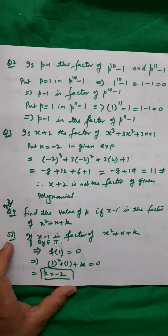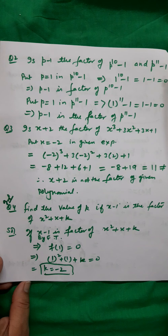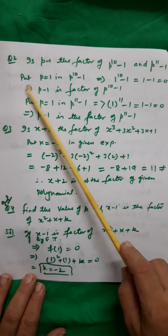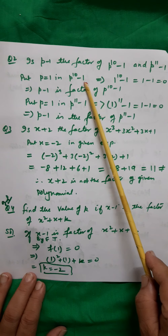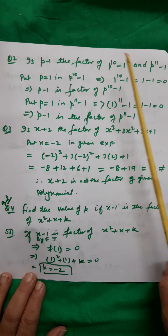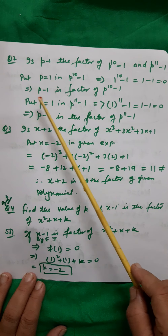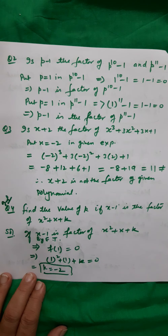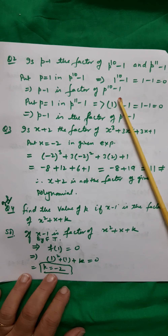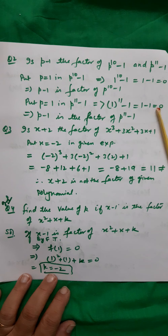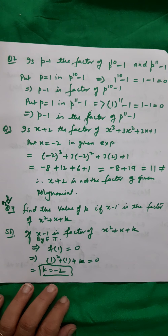Question 2: Is (p − 1) a factor of p¹⁰ − 1 and p¹¹ − 1? Put p − 1 = 0, giving p = 1. For p¹⁰ − 1: 1¹⁰ − 1 = 0, so remainder is 0, meaning (p − 1) is a factor. For p¹¹ − 1: 1¹¹ − 1 = 0, again remainder is 0, so (p − 1) is also a factor of p¹¹ − 1.